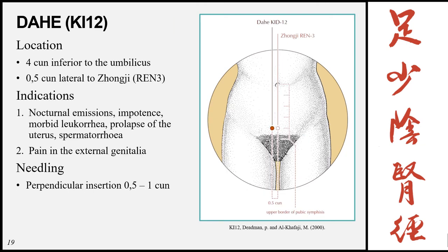Dahe, Kidney 12, is located 4 cun inferior to the umbilicus, 0.5 cun lateral to Zhongji (Ren 3) or the midline. Indications: nocturnal emissions, impotence, morbid leukorrhea, prolapse of the uterus, spermaturia, and pain of the external genitalia. Needling: perpendicular 0.5 to 1 cun.